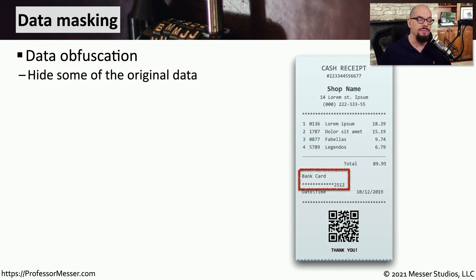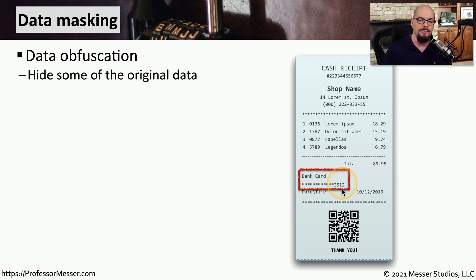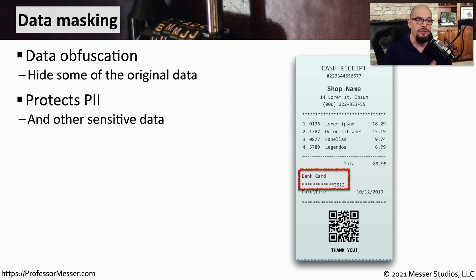Another way to protect data is by masking it. Data masking is a way to obfuscate data that makes it more difficult to read. Data masking can look like a bank card number on a receipt, where most of the card number has been masked out by asterisks and the only thing you can read are the last four digits. We can use data masking with any type of information, so this might help protect personally identifiable information, or PII, and any other sensitive data as well.